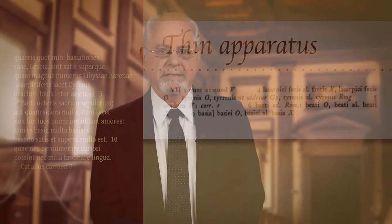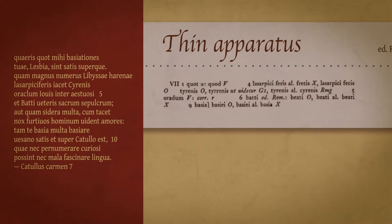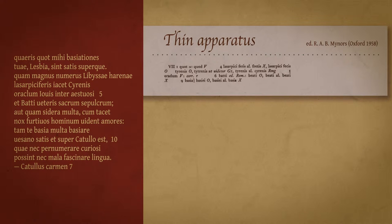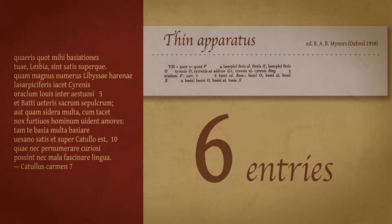If an editor chooses to produce a thin apparatus, it could look like the one provided by what is probably the basic text used in the English-speaking world — produced in the late 1950s by Roger Mynors for the Oxford Classical Text series, in which he provided a very thin apparatus. For the poem's 12 lines, he has only six entries, indicating places where manuscripts differ from one another.